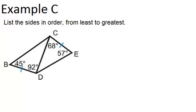Let's look at example C. List the sides in order, from least to greatest. And in this case, we have two triangles that are put together and share one side in the middle, and also have another side in common.